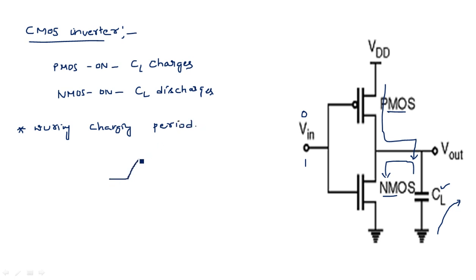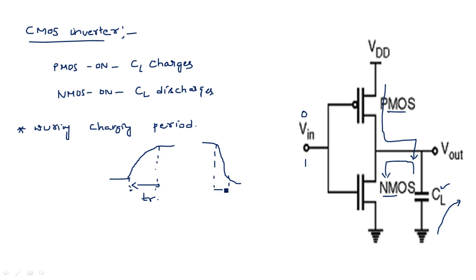During the charging period, the waveform looks like this, and this is known as rise time TR. If the opposite case is considered — going back to the normal — it is known as fall time TF. In this video you are going to learn how to calculate this rise time and how to calculate this fall time using the parameters of this CMOS inverter.